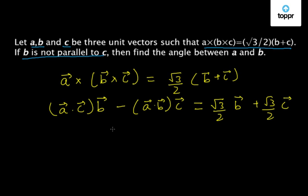Now, we can see here that on the left hand side, we have a term of B and a term of C. Similarly, on the right hand side, we have a term of B and a term of C. So, let us equate the coefficients of B and C from the left hand side and the right hand side.